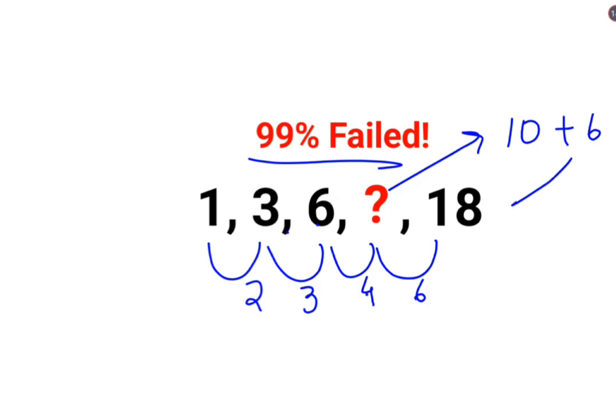So obviously this is not the right logic, but probably it might be a little bit different. Like yes, if we are talking about differences, but what if we have 2 and 3 also in terms of a prime number series?